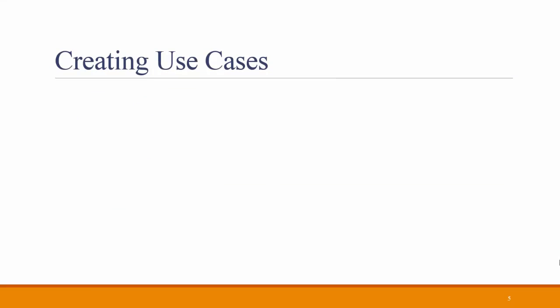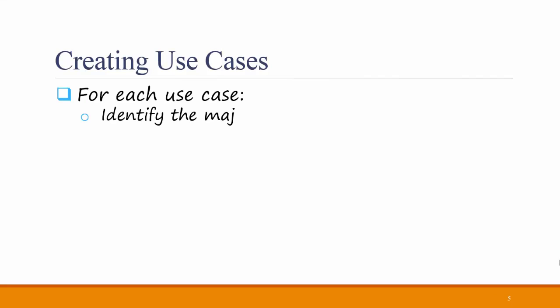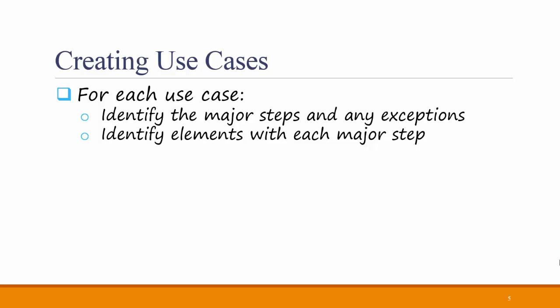For each use case that you identify, you should first identify the major steps in that use case and any exceptions. You should also identify elements within each major step — these could include important inputs and outputs from each step. Identifying these elements will help you make sure you have the right steps in your use case. Finally, you should confirm the use case with users.